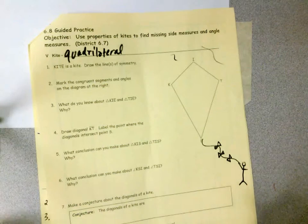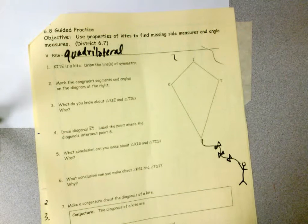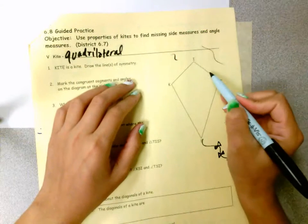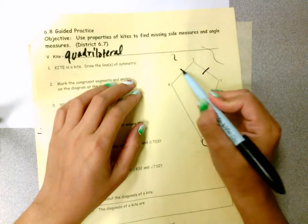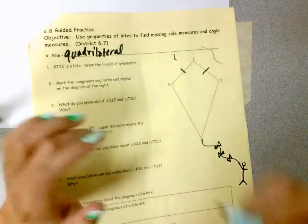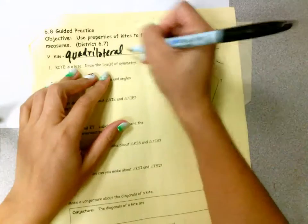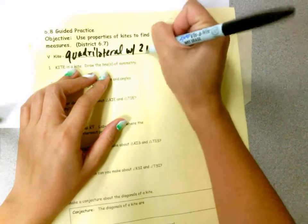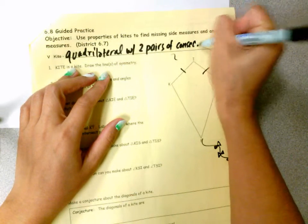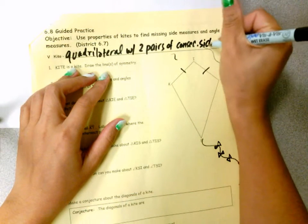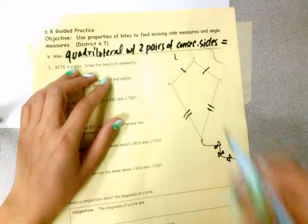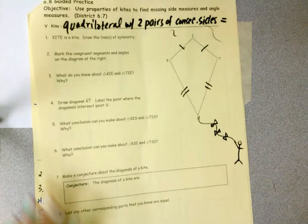Quadrilateral. Excuse my handwriting. With two pairs of sides congruent. Basically, this one is congruent to this one. So they're right next to each other. With two pairs of consecutive sides equal. This one pair, this is the second pair that is the same.